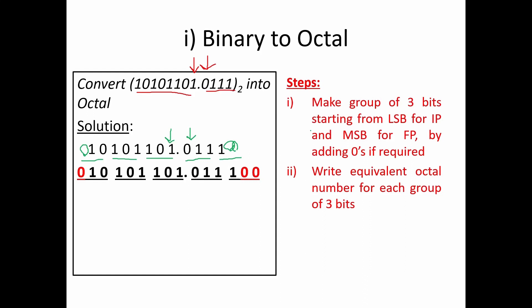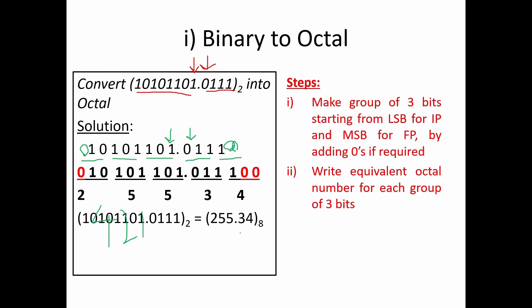After making the groups of 3 bits, the second step is writing the equivalent octal number for each group using the 4-2-1 code. The octal equivalent comes out as 255.34 base 8.